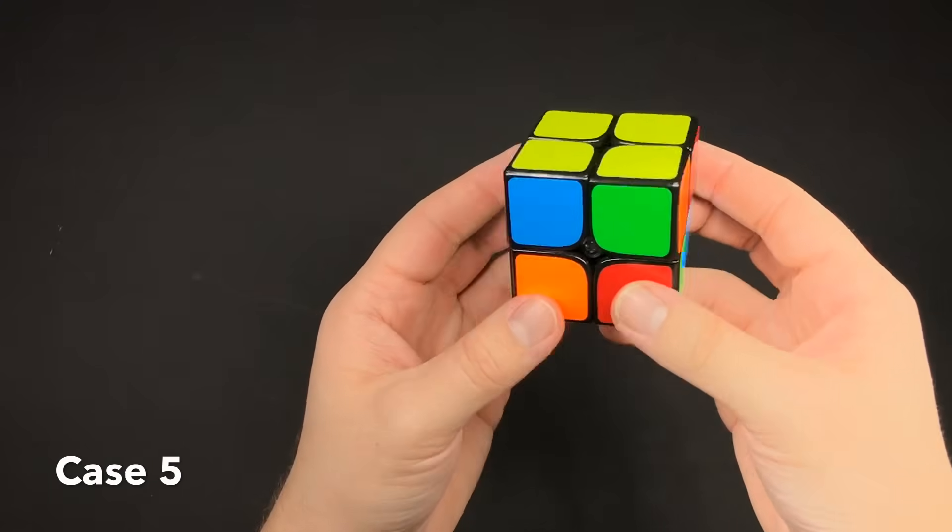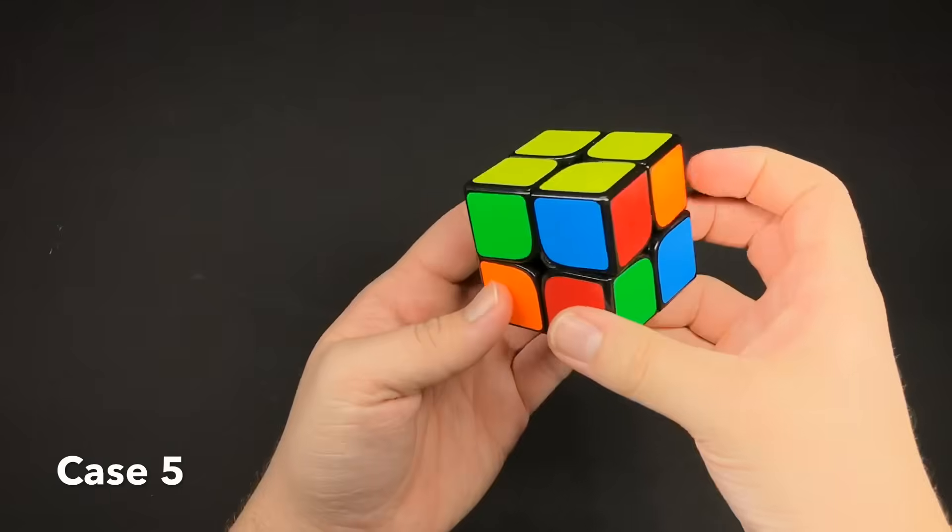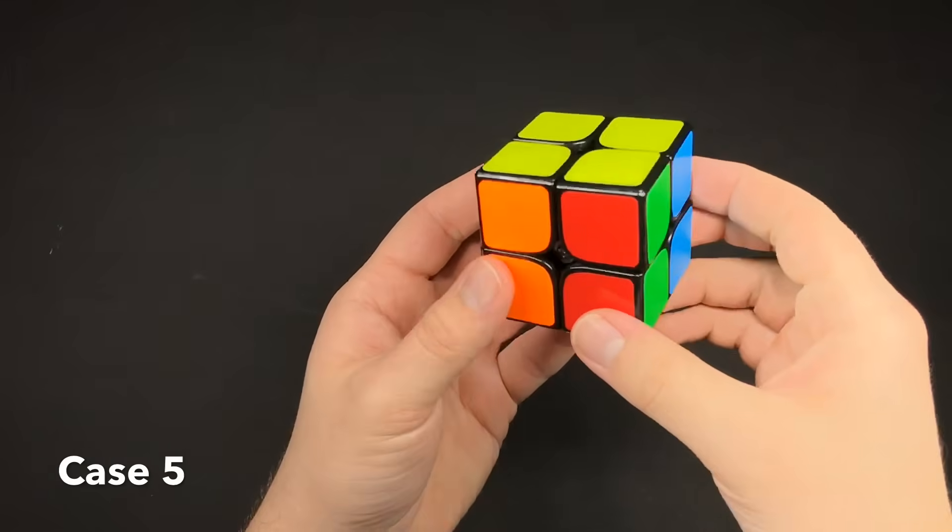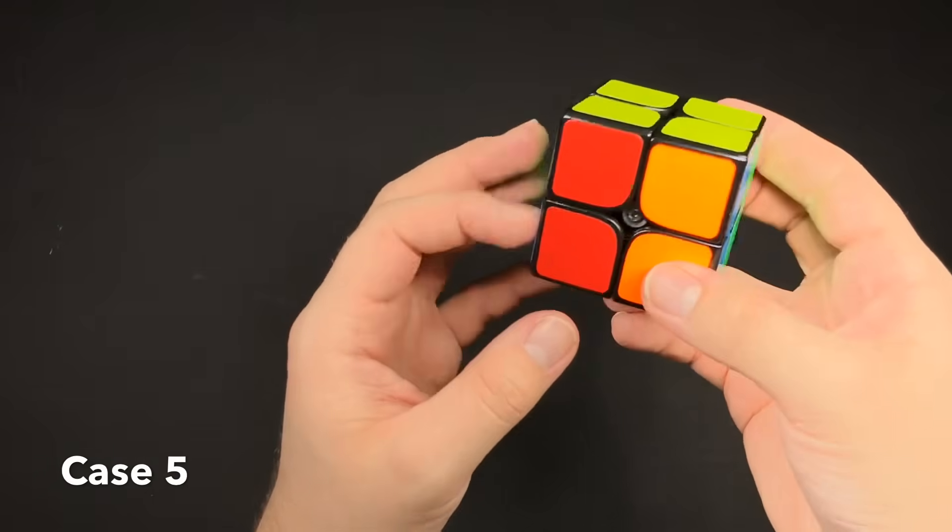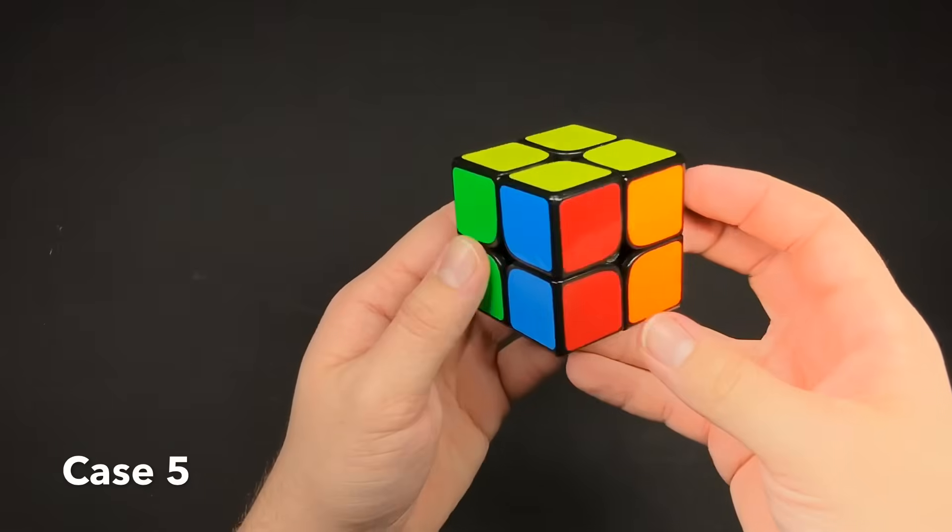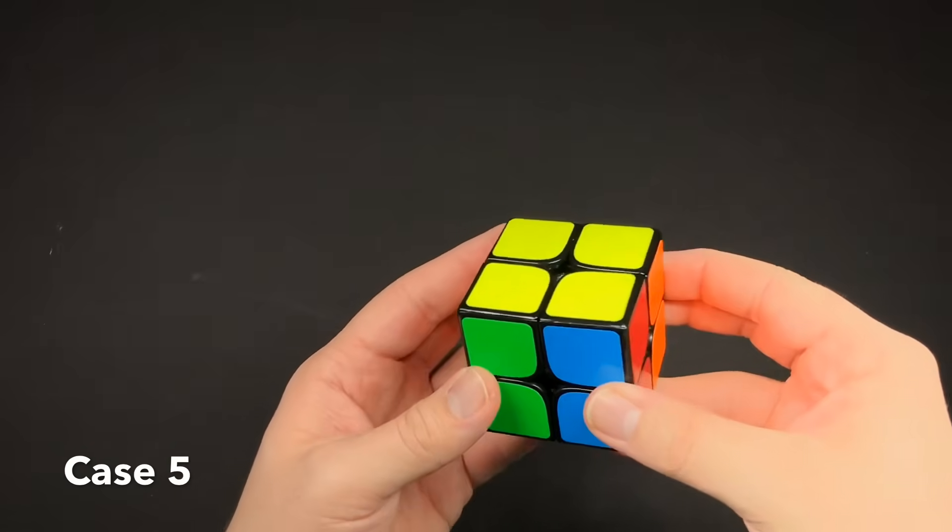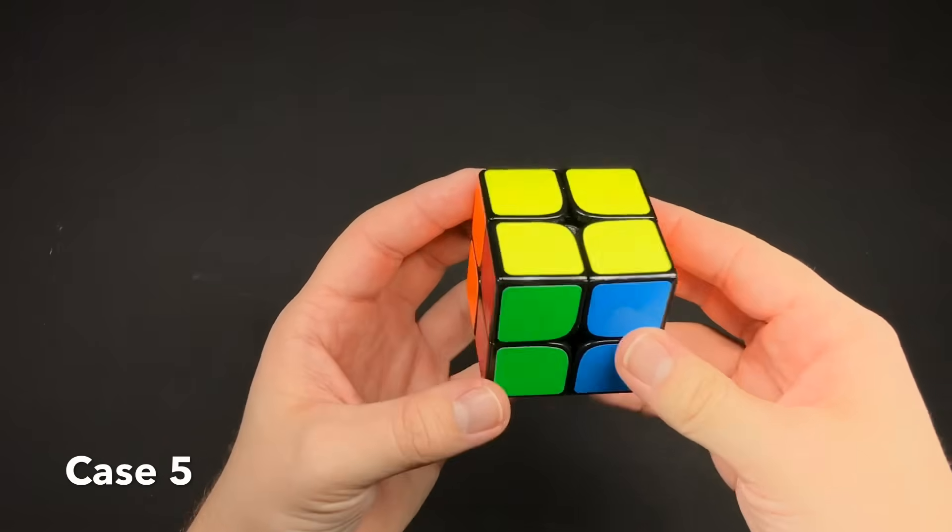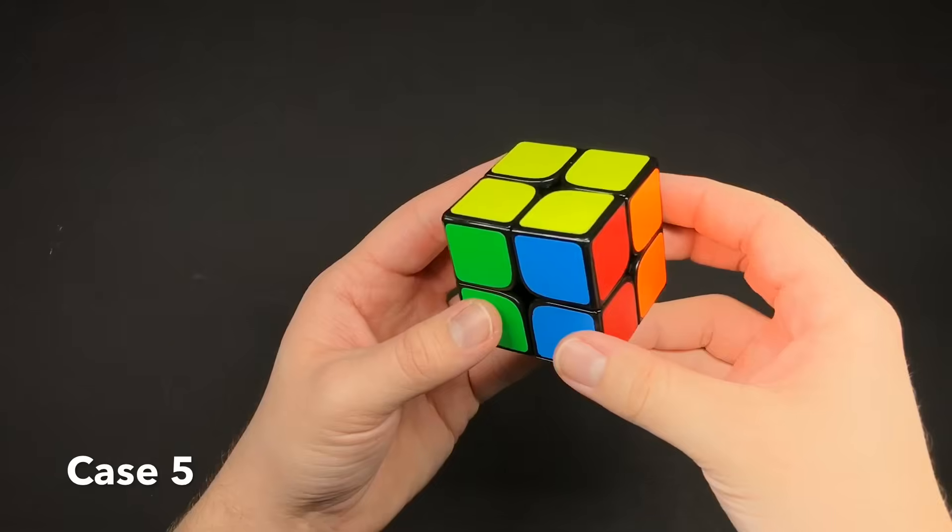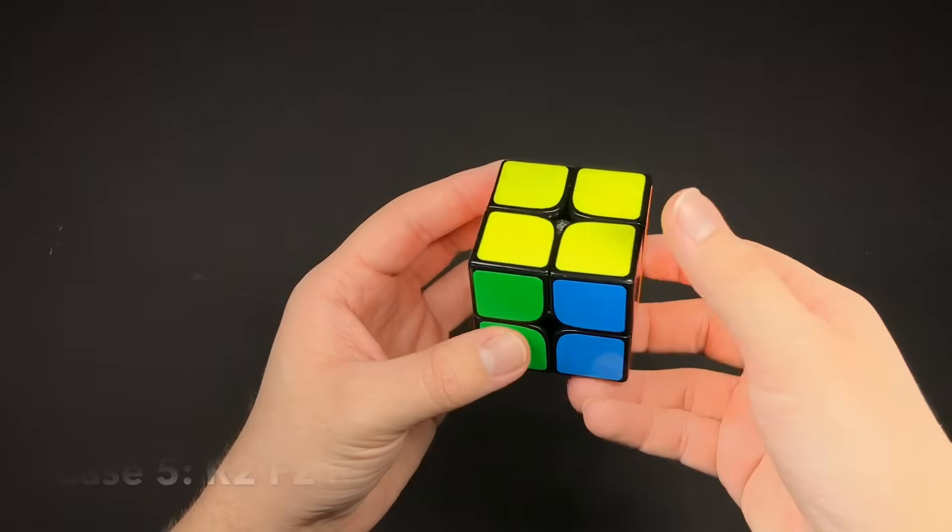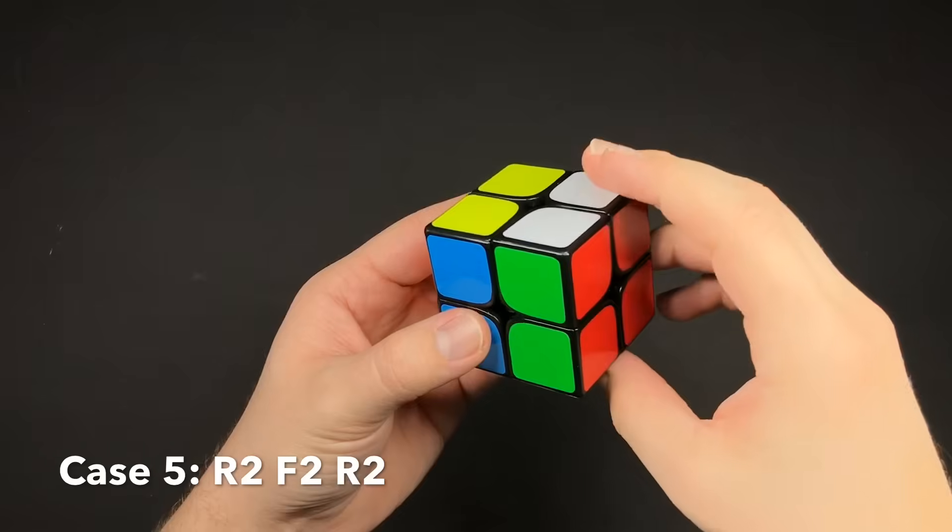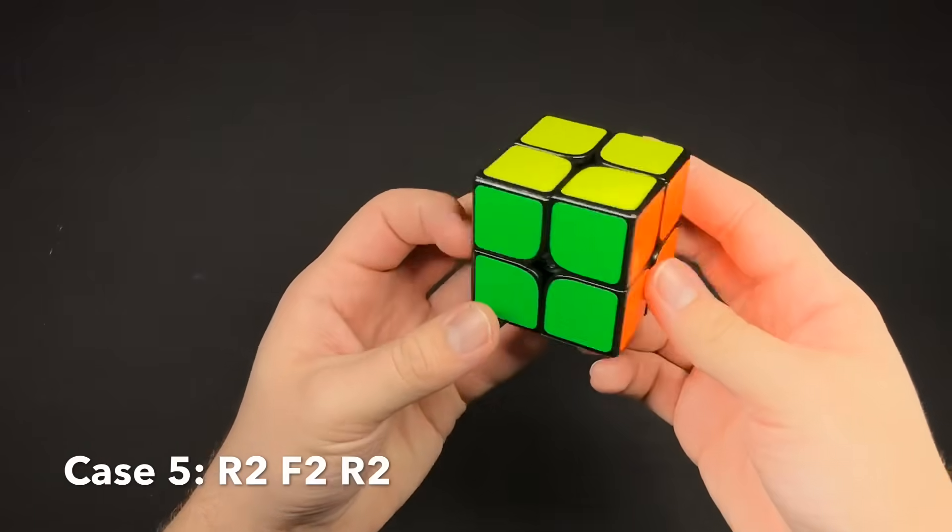The last case is when there are no bars anywhere, and what you need to do is turn the last layer so there's a bunch of bars everywhere, like columns everywhere. This is actually the easiest case. The algorithm is only six moves, and it goes like this. It doesn't matter where you hold it, it'll always work. And that's it. That's super fast.